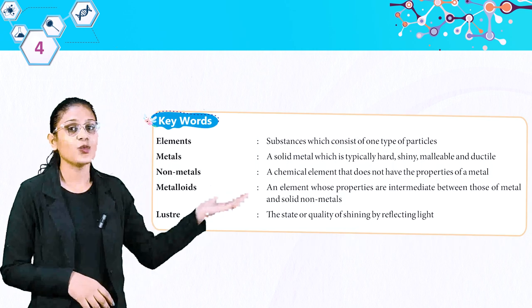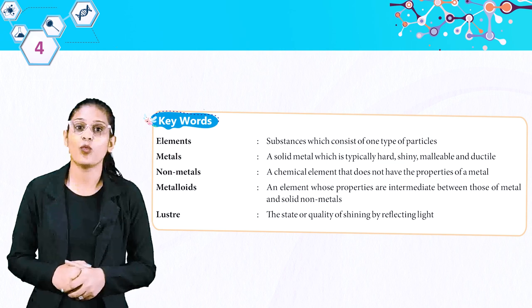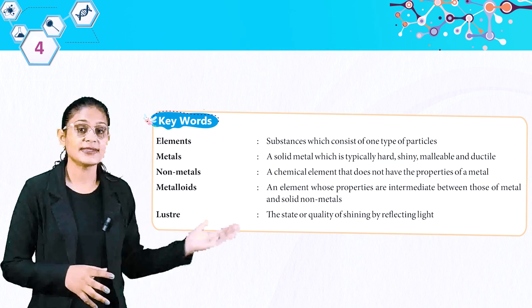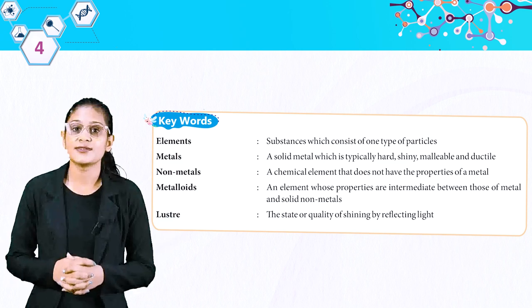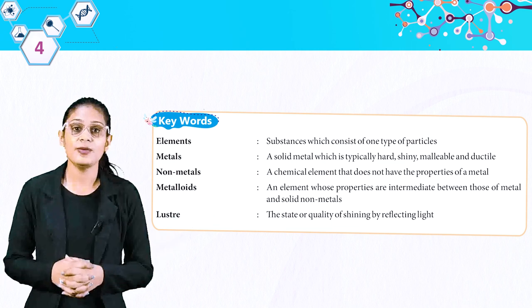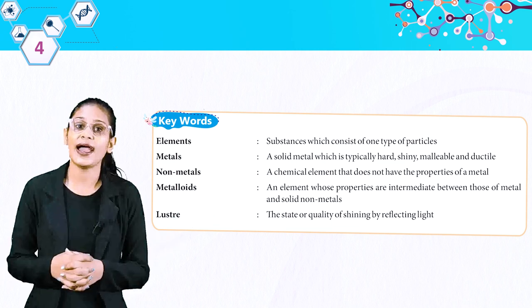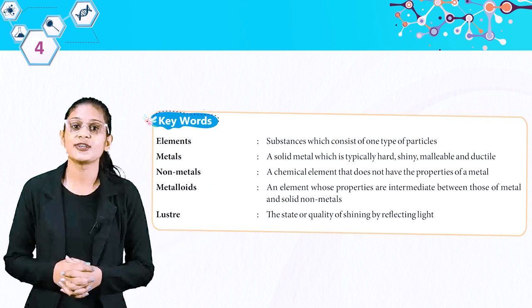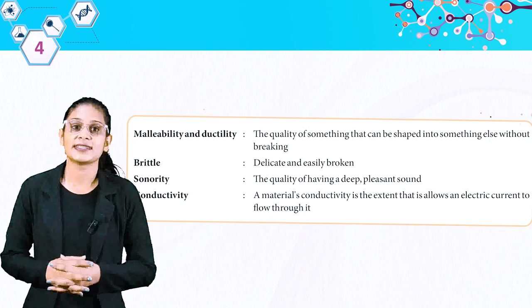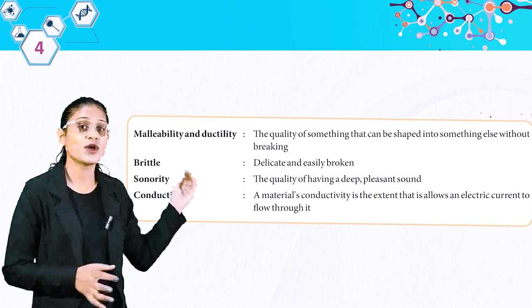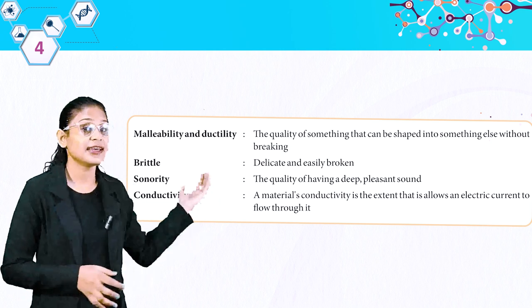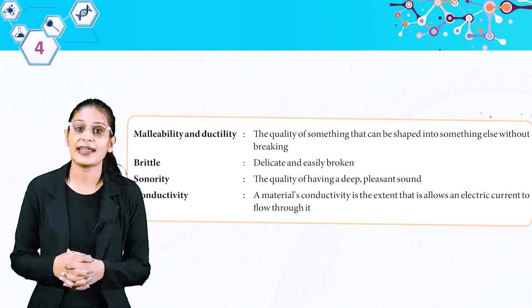Keywords: Elements — substances which consist of one type of particles. Metals — typically hard, shiny, malleable and ductile. Non-metals — chemical elements that do not have the properties of metals. Metalloids — elements whose properties are intermediate between metals and non-metals. Lustre — the state or quality of shining by reflecting light. Malleability and ductility — the quality of something that can be shaped without breaking. Brittle — delicate and easily broken. Sonority — the quality of having a deep pleasant sound. Conductivity — the extent to which a material allows electric current to flow through it. Thank you students, we will meet again in the next chapter. Till then, revise what we learned today.